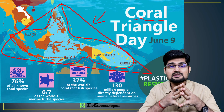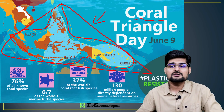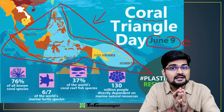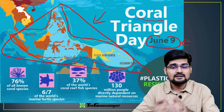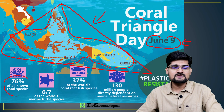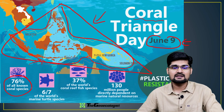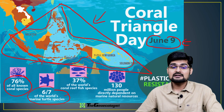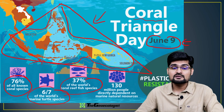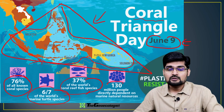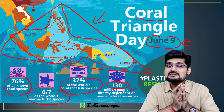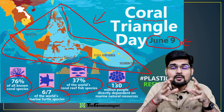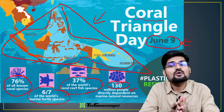This Coral Triangle region has essential conditions for the world's greatest biodiversity, especially marine biodiversity. June 9th has been declared as Coral Triangle Day for the awareness campaign. Seventy-six percent of all coral species are found in this triangle, six out of seven of the world's marine turtle species are found here, 37% of world's coral reef fish species are found here, and 130 million people reside in these islands. This is an important area especially for coral reef protection.